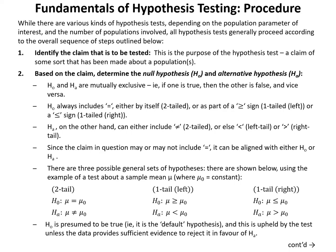While there are various kinds of hypothesis tests depending on the population parameter of interest and number of populations involved, all hypothesis tests generally proceed according to the same sequence of steps. In step one, we identify the claim to be tested. In step two, based on the claim, we determine the null hypothesis (H₀) and alternative hypothesis (Hₐ).